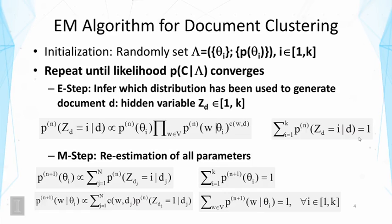The EM algorithm starts with initialization of all the parameters, exactly the same as what happened before for topic models. Then we repeat until the likelihood converges, and in each step we do an E-step and M-step. In the E-step we infer which distribution has been used to generate each document, so we introduce a hidden variable Z_D for each document.